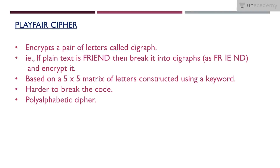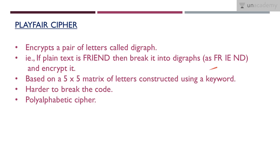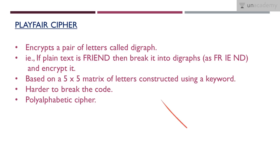In Playfair cipher we actually consider a pair of letters called a digraph. In Caesar cipher we were taking one letter and replacing it with another letter, but here instead of taking one letter, we take a pair of letters which we call a digraph. For example, if the plain text is 'friend', then we break it into digraphs as FR, IE, ND — simply pairs. We take each pair and encrypt it, so we take FR first and replace it with another pair of letters.